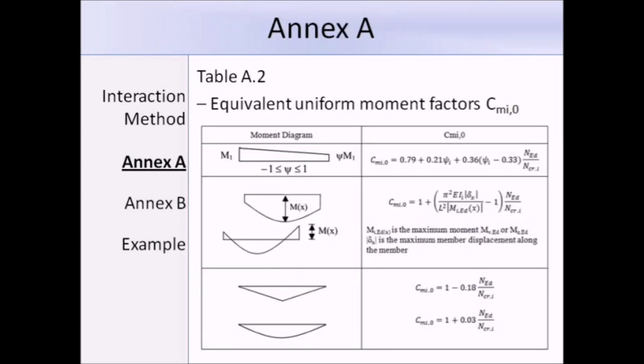This is table A.2, and here's where we get the formula to work out the value of CMY0, which I mentioned before. That just depends on the shape of the bending moment diagram. Overall, method 1 is quite long and tedious, but remember, the results will provide more efficiency.